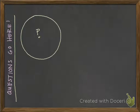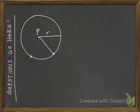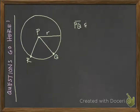Here's a cleaned up version of that circle. That distance from P is R, or is called the radius, and it's special to this circle P. The distance between the center P and any point on the circle — those are radii. For example, segment PQ and segment PR are radii. Radii is the plural of radius.